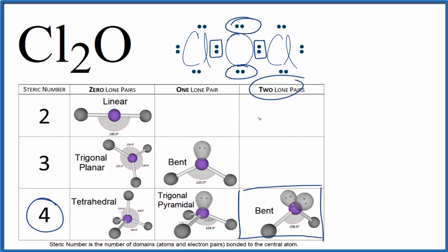We could also use the AXE notation. A, that's the central atom, the oxygen. X, the number of atoms bonded to it. We have those one, two chlorine atoms. And E, the number of lone pairs. We have one, two. So AX2E2, that would give us a bent molecular geometry as well.